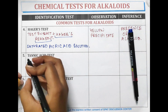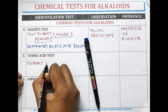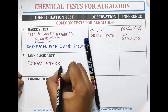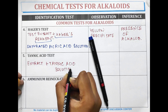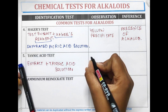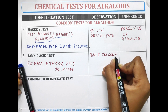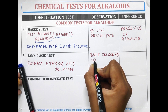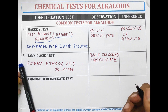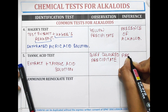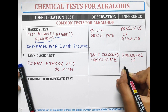Tannic acid test: in this test, the extract is mixed with tannic acid solution. A buff-coloured precipitate is obtained, indicating the presence of alkaloid.